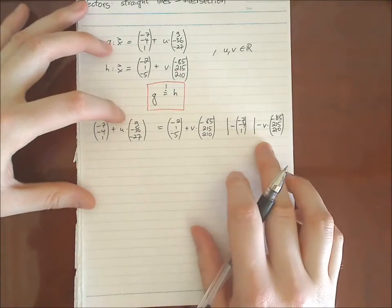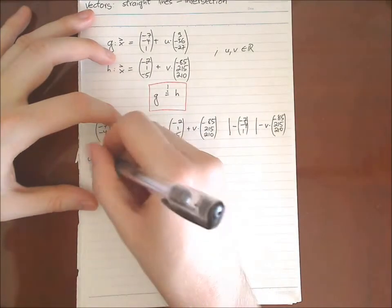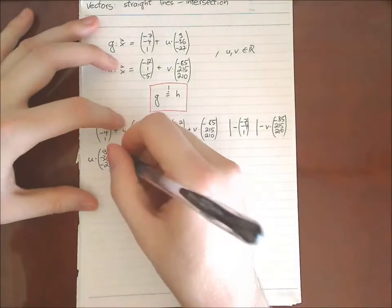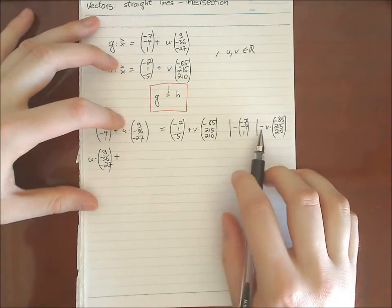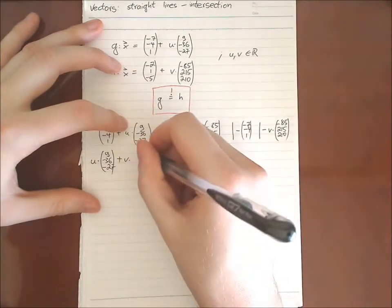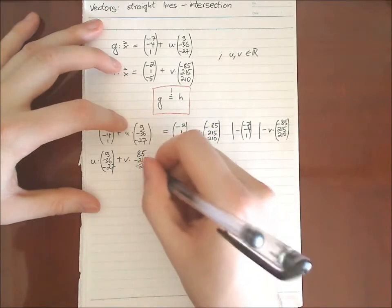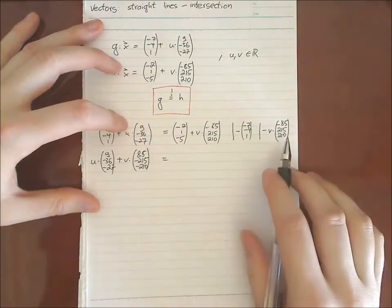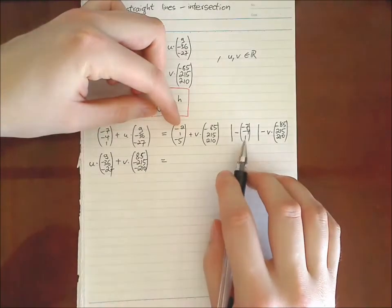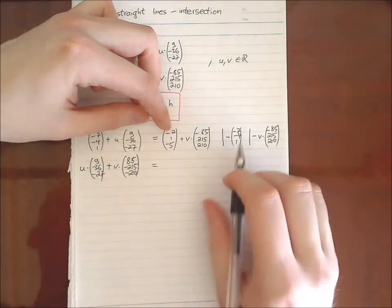So we just calculate it, we end up with u, which is nine, minus 36, minus 27. Then in this case, I write plus and write the minus in the vector. So plus v times 85, minus 215, minus 210 equals. Now this step we just did, those two vectors, those two support vectors, we can calculate together.